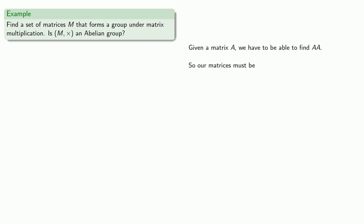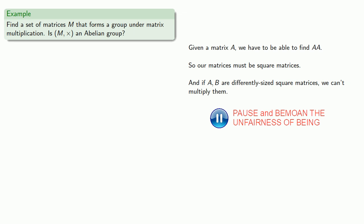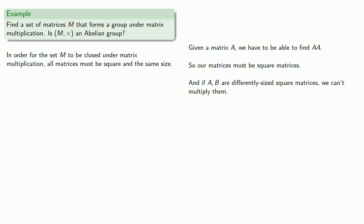Now if A and B are differently sized square matrices, we can't multiply them. And since closure is a requirement for a group, then in order for the set M to be closed under matrix multiplication, all matrices must be square and the same size. So we'll make M the set of, oh, I don't know, how about 23 by 23 matrices.